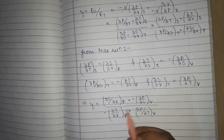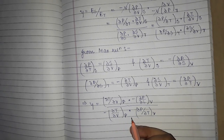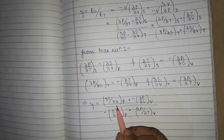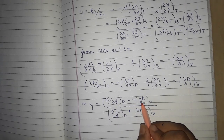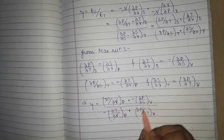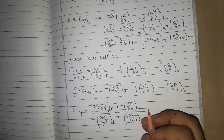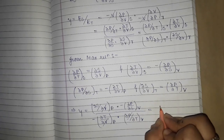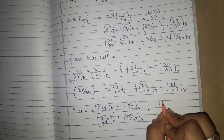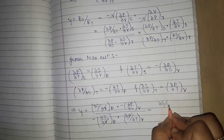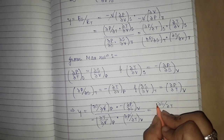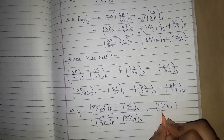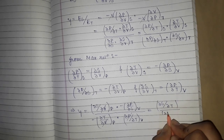Now wherever terms cancel — dV and dV cancel, dP and dP cancel — we are left with dS/dT terms: specifically T(dS/dT) at constant P over T(dS/dT) at constant V.